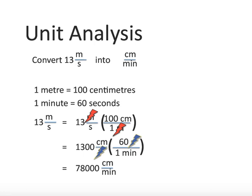That gives us 78,000 centimeters per minute. So 13 meters per second is the same thing as 78,000 centimeters per minute. Now, the last thing to consider is significant digits. 13 has two significant digits.